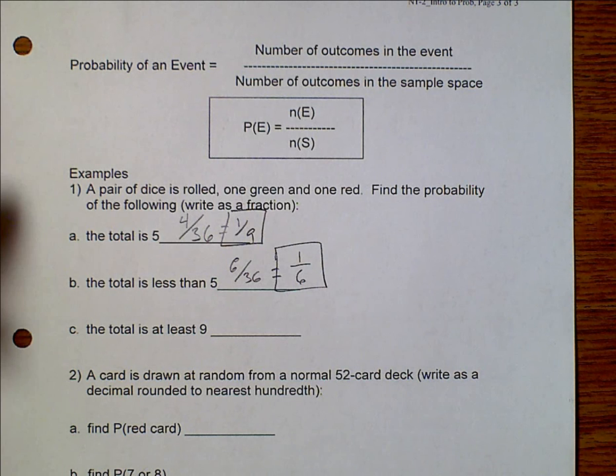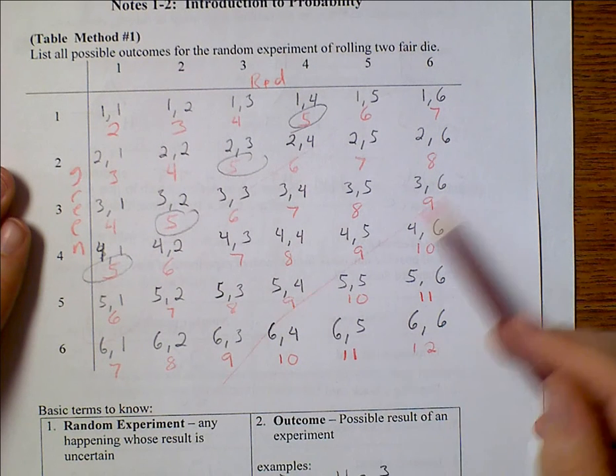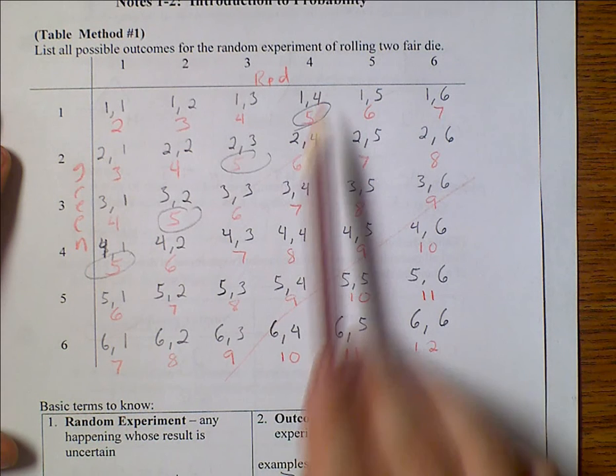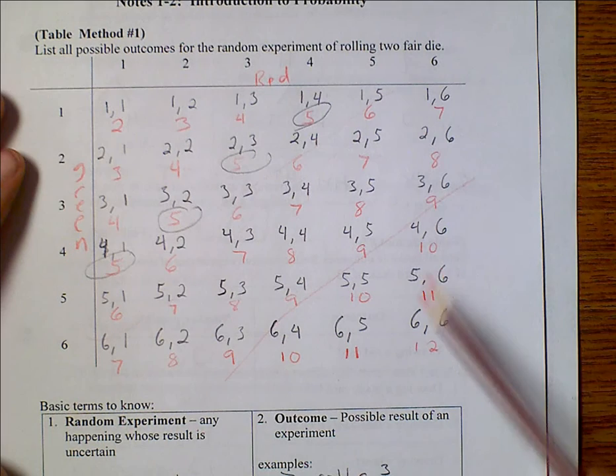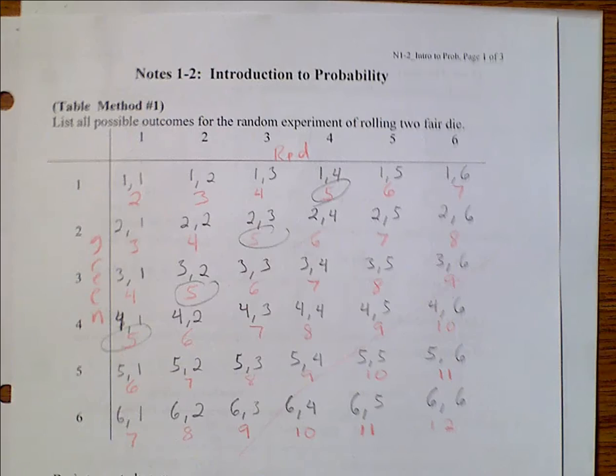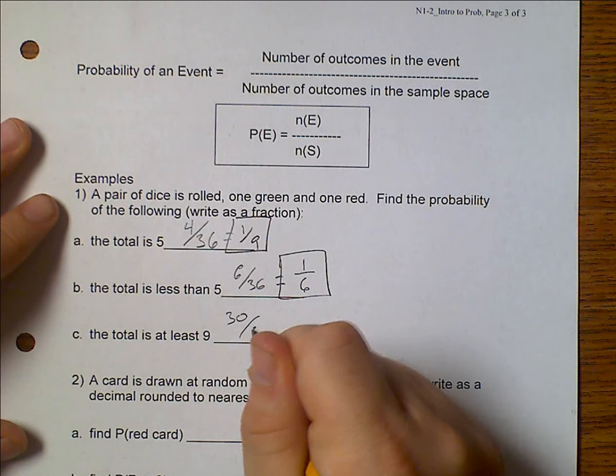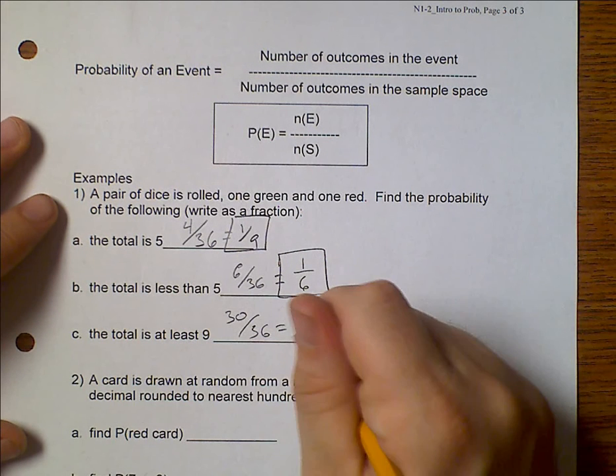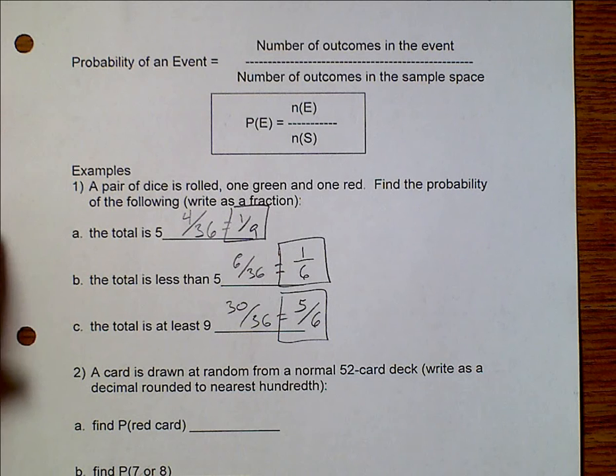And now we want to know the total is at least 9. At least 9 means we include 9. So that would be 1, 2, 3, 4, 5, 6, 7, 8, 9, 10, 11, 12, 13, 14, 15, 16, 17, 18, 19, 20, 21, 22, 23, 24, 25, 26, 27, 28, 29, 30. Or all but 1, 2, 3, 4, 5, 6. So 36 minus 6 is 30. And so here we have 30 over 36, which when we simplify that gives us 5 sixths. And so that's with our pair of dice.